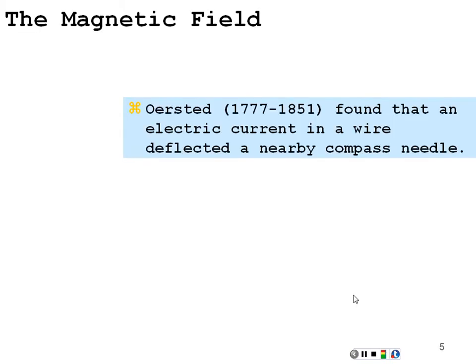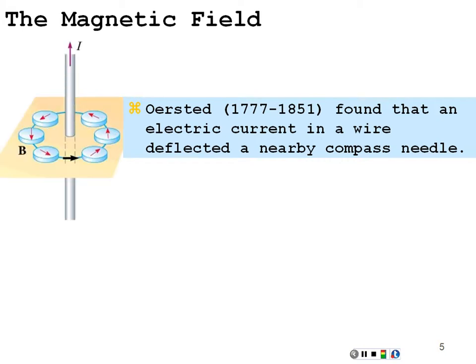The magnetic field — a little history. Hans Christian Oersted, in 1777–1851, found that an electric current in a wire deflected a nearby compass needle. In other words, as you move a compass around a wire carrying a current, the needle deflects in a way that indicates there is a circular magnetic field going around the wire.